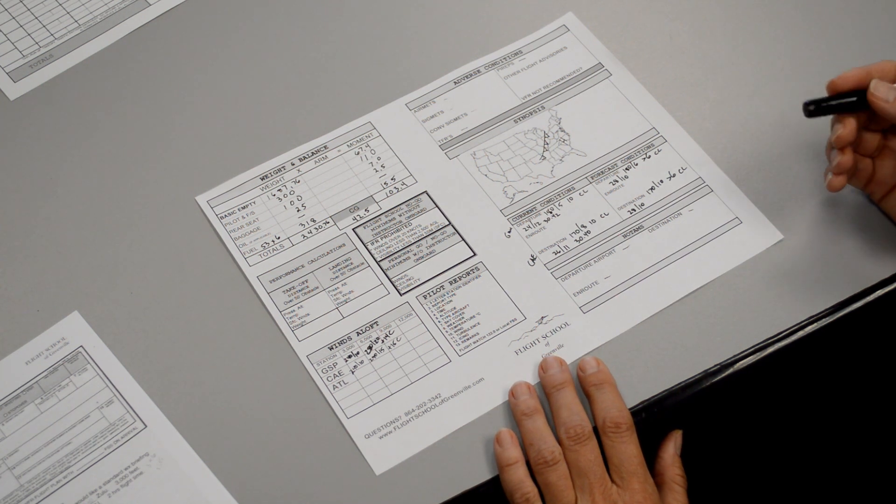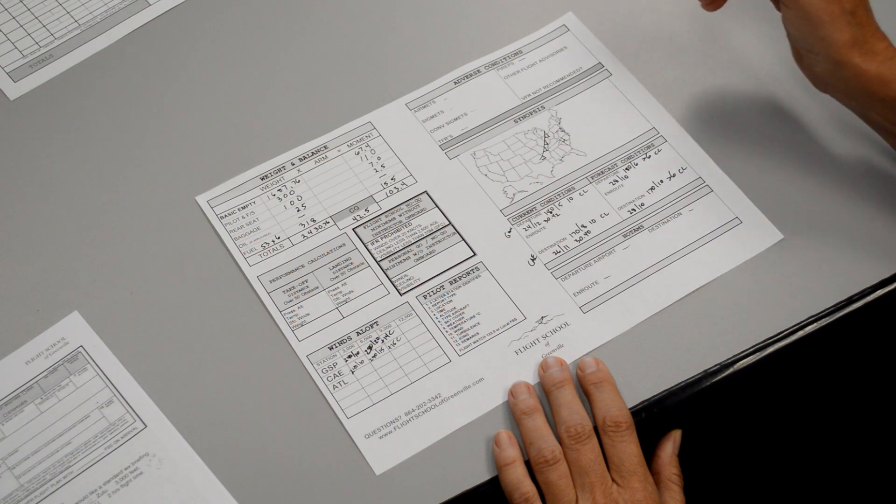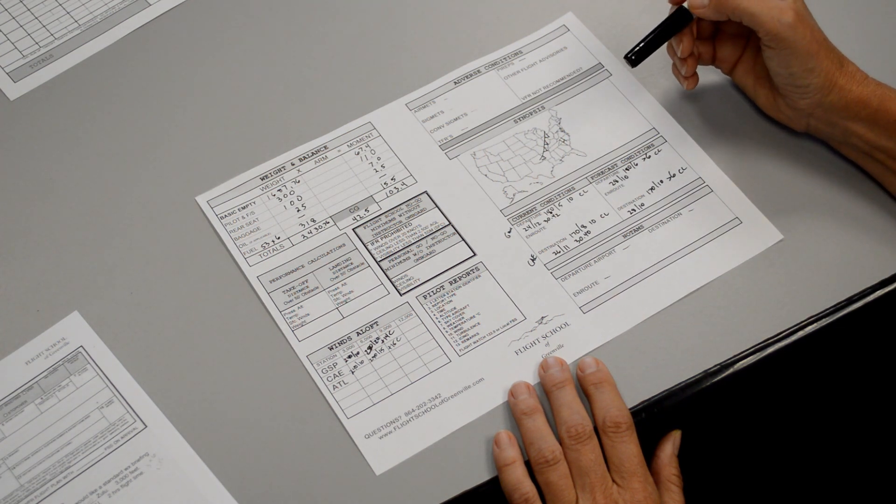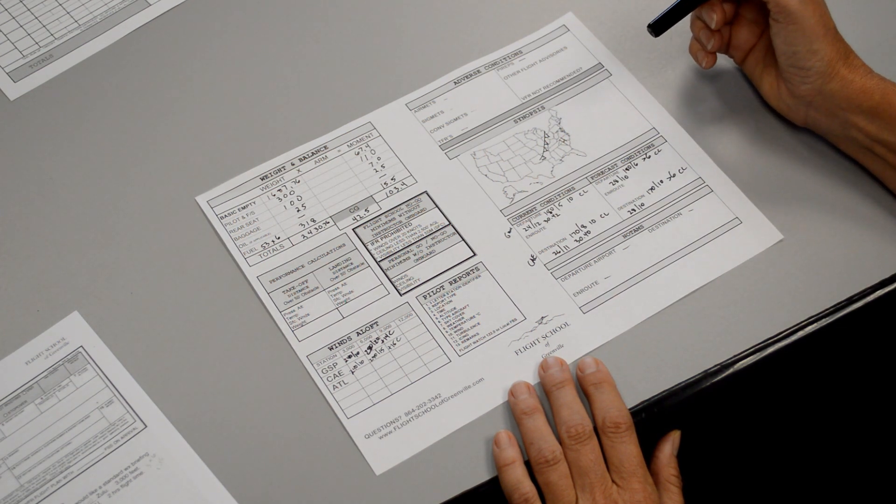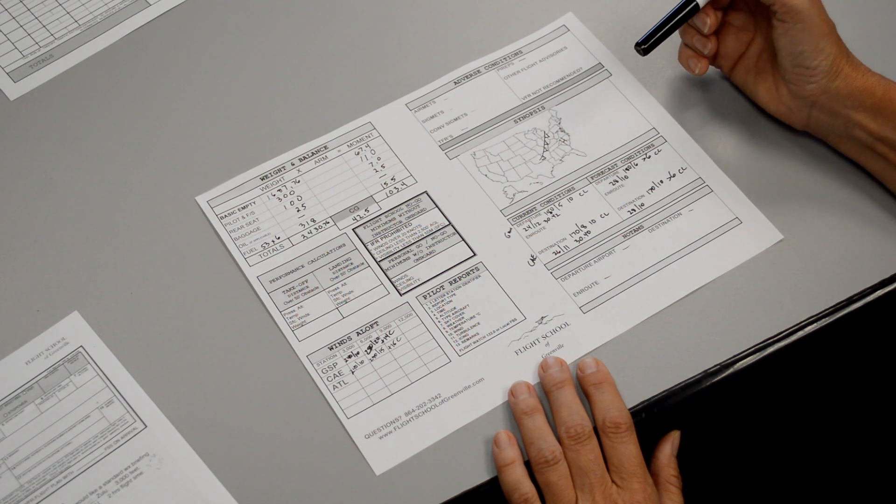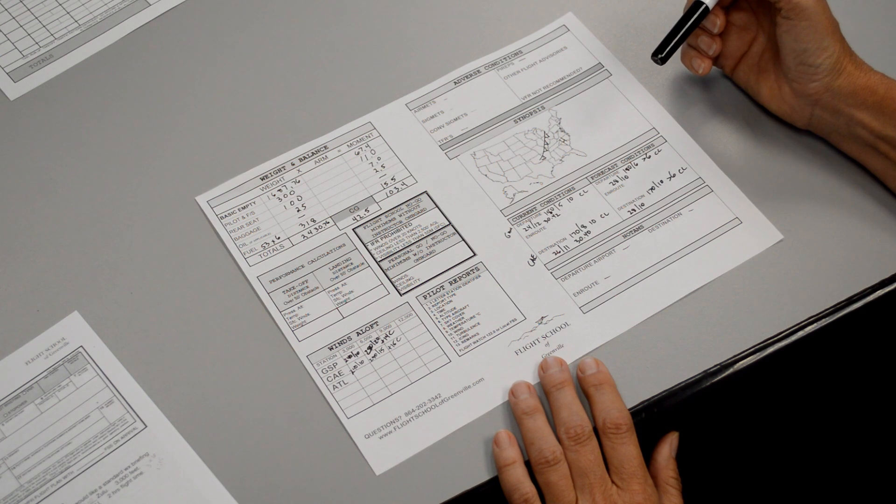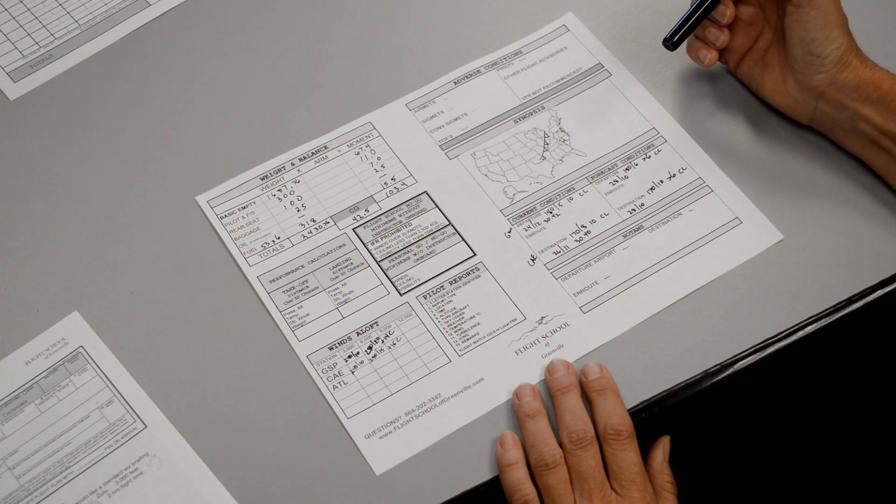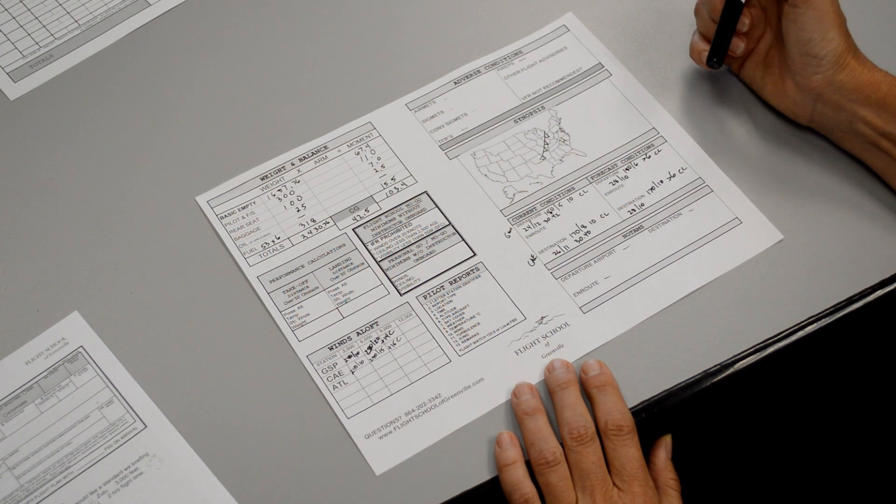So, once we're at, say, 3 or 4,000 feet, we're going to have to comply with our odd thousand plus 500 rule. It looks like there's about 90 miles or so between Greenville and Columbia. So, I don't think it would be worth it to climb all the way up to 7,500 or 9,500. So, I think we'll choose 5,500 for this flight.